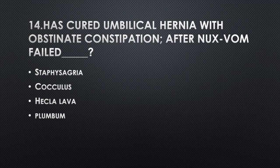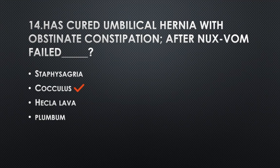Has cured umbilical hernia with obstinate constipation after Nux vomica failed — Option A: Staphysagria, Option B: Cocculus, Option C: Hecla lava, Option D: Plumbum metallicum. Answer: Option B, Cocculus.